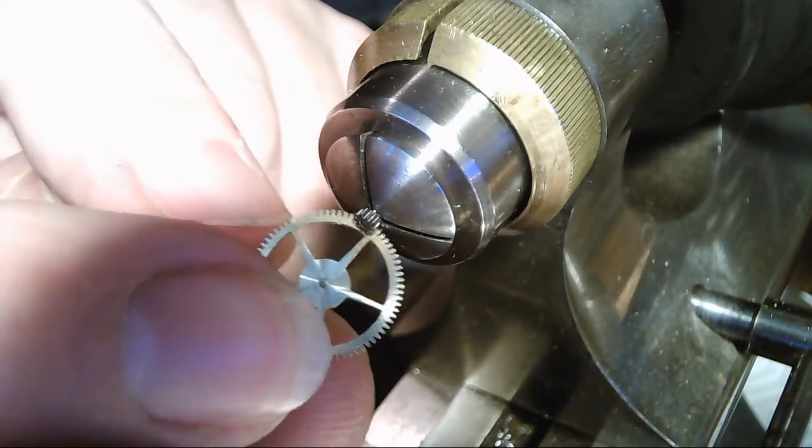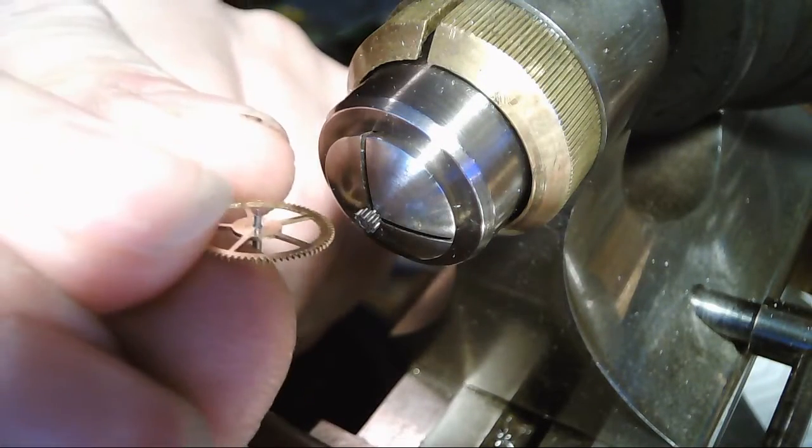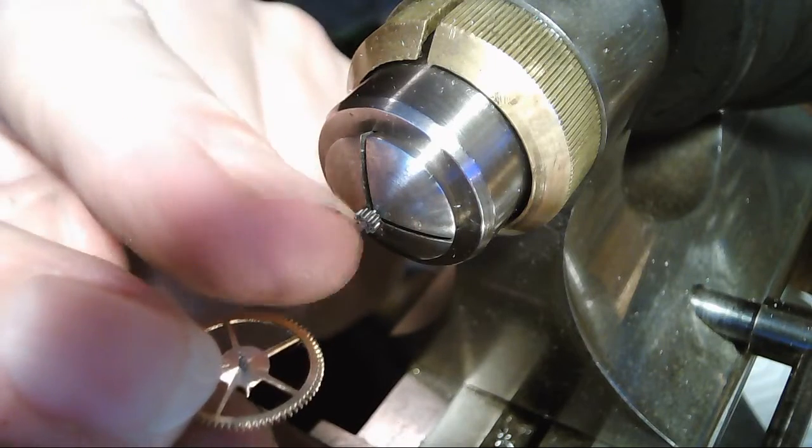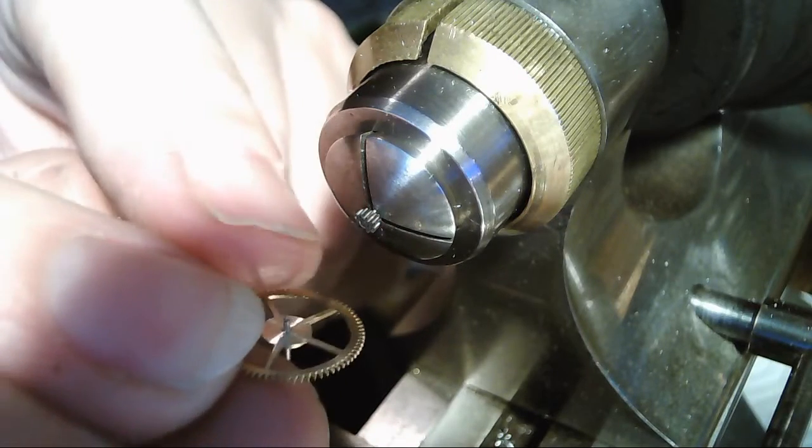Right below the pivot right there, same diameter as that. So I can slip pressure fit this on. If I can't pressure fit it on, I'll just glue it on.